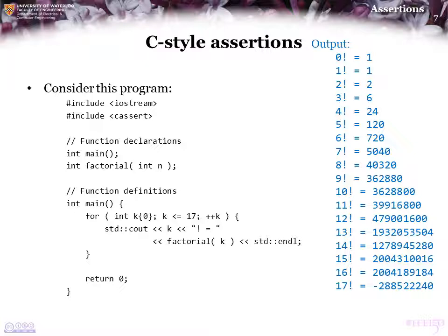0 factorial is equal to 1. 1 factorial is equal to 1. So far, so good. 4 factorial, 5. Those all look more or less right. Now, if we go down here and look at 11 factorial, we see that's about 40 million.